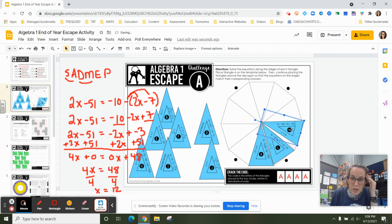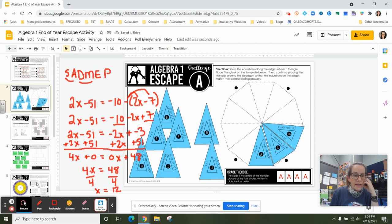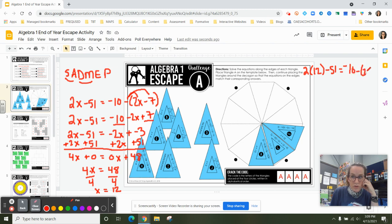If I wanted to check my work, and it doesn't have to be perfect, but if I wanted to check my work, I can take that 12, I can go back to my original problem, and I can plug it right in. So I should be able to do 2 times 12 minus 51 equals negative 10 minus 2 times 12 minus 7. And follow order of operations, and I should get the same number on both sides of my equal sign. 2 times 12 is 24. And I've got negative 10 minus 2 times 12 is 24.